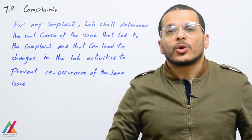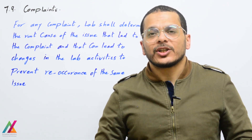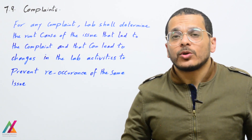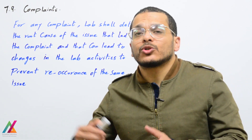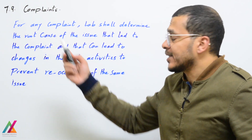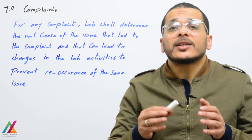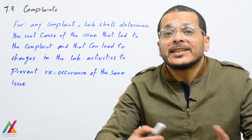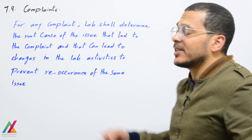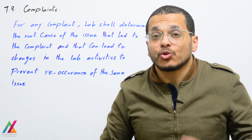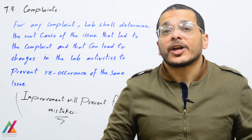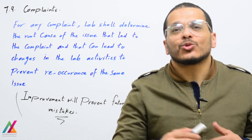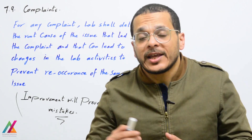Welcome back to a new lecture on ISO/IEC 17025:2017, still in process requirements Section 7.9 — Complaints. In this section you will find more details about complaints than in the 2005 edition. For any complaint, the lab shall determine the root cause of the issue that led the customer to make the complaint, which can lead to changes in lab activities to prevent recurrence. Based on the customer complaint, the lab shall take action not only to solve the issue but also to prevent it from happening again with any other customer, leading to customer satisfaction.